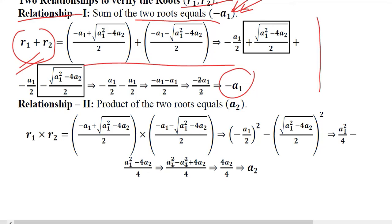Then we have a relationship two: product of the two roots equal A2. R1 and R2 when they get multiplied we get this thing, that is these terms and the answer would be A2. So again you can pause the video and do this simple calculation.